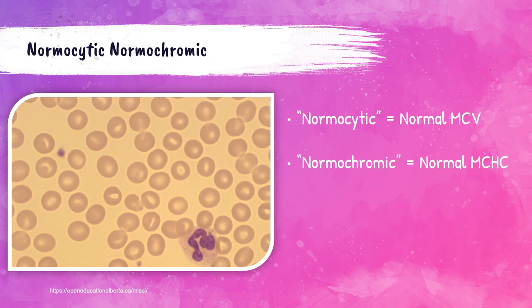Two of the red blood cell indices are MCV (mean cell or mean corpuscular volume) and MCHC (mean corpuscular hemoglobin concentration). MCV is the average volume of the red blood cells in a patient's bloodstream and corresponds to red blood cell size. If the patient has a normal MCV, their red blood cells will be normal size and are referred to as normocytic. MCHC refers to the average concentration of hemoglobin present in the red blood cells, corresponding to the color. If a patient has a normal MCHC value, it's called normochromic.